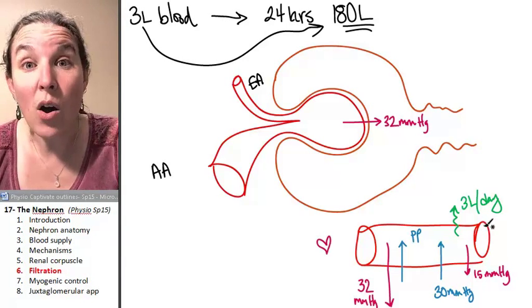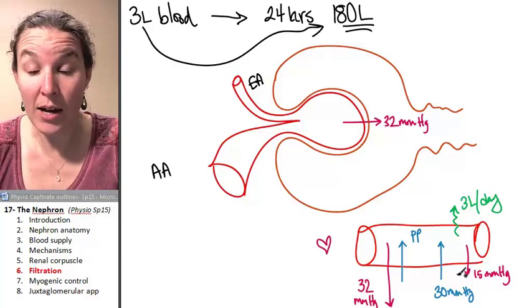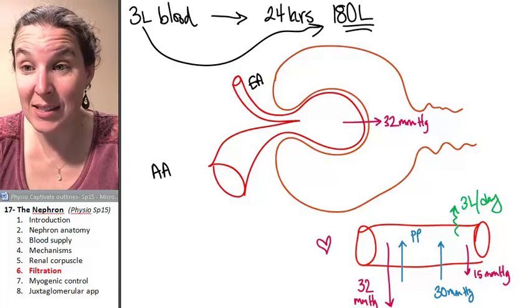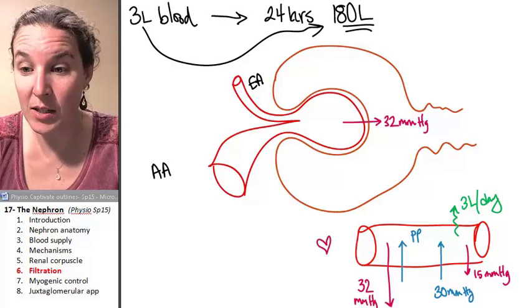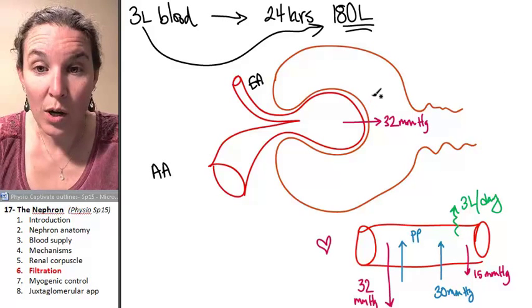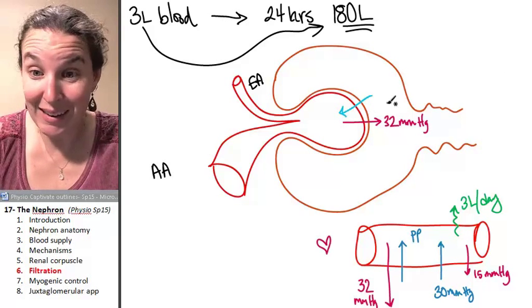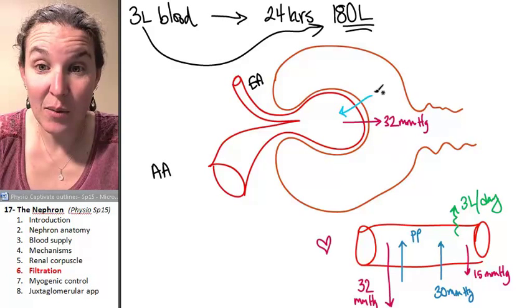Here, we also have hydrostatic pressure. And it's the same, I mean, not hydrostatic, but osmotic pressure. We're going to pull our fluid back in, and it's going to be about 30 millimeters of mercury, pulling our fluid back in.